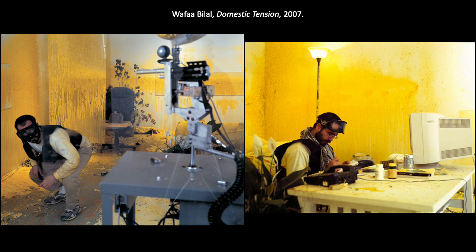Wafaa Bilal was born in Iraq in 1966. As a young artist, he was arrested for making art critical of the dictator Saddam Hussein. In 1991, he fled Iraq rather than participate in the invasion of Kuwait. After living in a refugee camp, Bilal eventually settled in the United States, where he completed art school and started a career as a professor in New York City. When Bilal left Iraq, his family stayed behind. His brother was killed in 2004 by bombs dropped by the American armed forces. This work, Domestic Tension, also known as Shoot an Iraqi, was Bilal's response to this event and the U.S. war against Iraq.